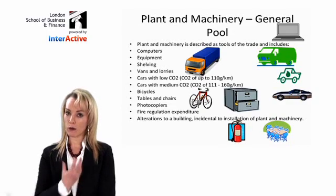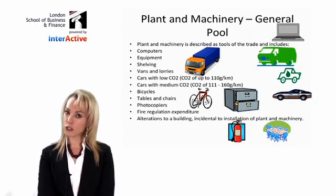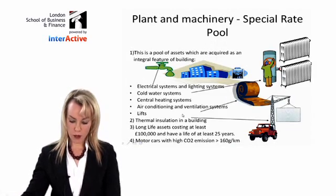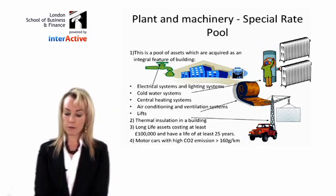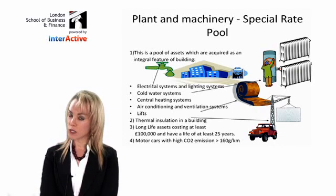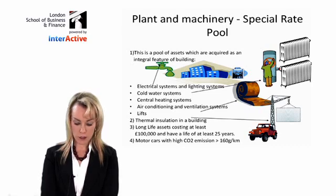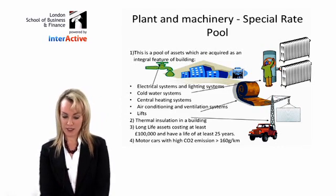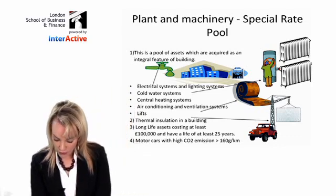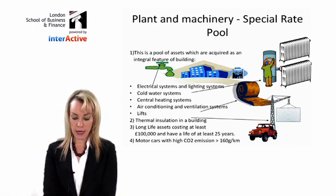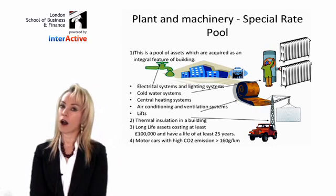Looking further at the definition of plant and machinery and what it includes — some more examples would be plant and machinery that is stuck to a building, like lifts, cold water systems, central heating systems, air conditioning, and long-life assets. A long-life asset is an asset with a long life, and a big crane is an example of a long-life asset. Motor cars that are high emission are also included in this category.